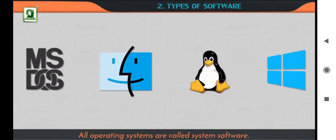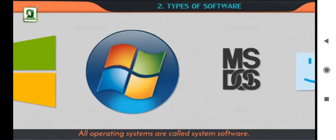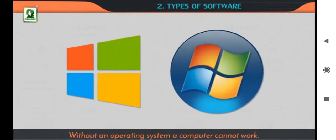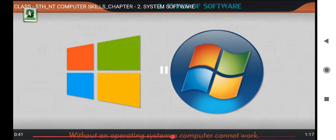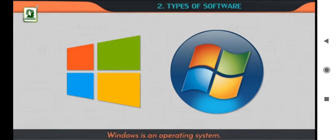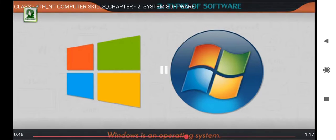All operating systems are called system software. Without an operating system, a computer cannot work. Windows is an operating system.